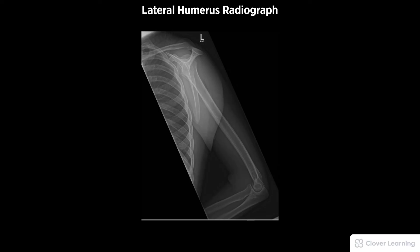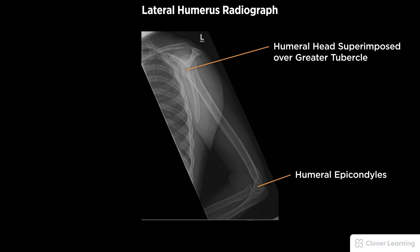A diagnostic lateral humerus radiograph must be free of motion with a 90 degree lateral rotation. Demonstrated anatomy includes the superimposed humeral epicondyles, the humeral head superimposed over the greater tubercle, and the lesser tubercle in profile on the medial side, with proper visualization of bony detail.